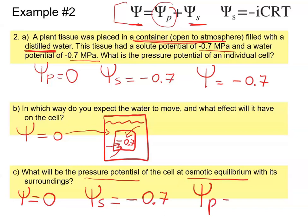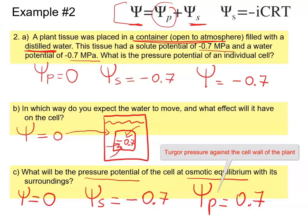Therefore, the only thing that changes is the pressure potential, which will be a positive 0.7 megapascals. Water moving in causes the cell to become more turgid, and we can observe the pressure being exerted against the cell wall as turgor pressure.